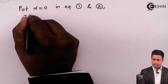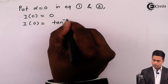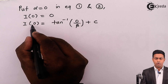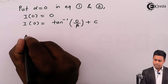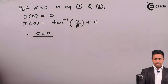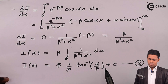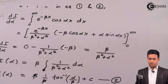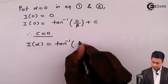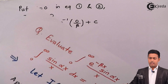From equation one, I(0) equals 0. From equation two, I(0) equals tan inverse of 0 by beta plus C. Since I(0) is 0 and tan inverse(0) is 0, we get C equals 0. Putting this value of C in equation two gives the value of I(alpha) as tan inverse of alpha by beta. So I(alpha) equals tan inverse of alpha by beta.